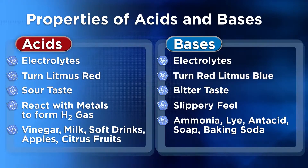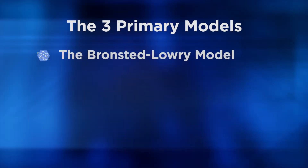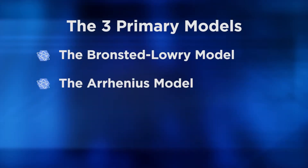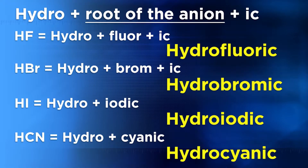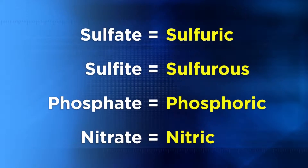We examined the three primary models of acids and bases: the Bronsted-Lowry model, the Arrhenius model, and the Lewis model. We investigated how to name binary acids and oxyacids, and how to both measure and calculate pH.